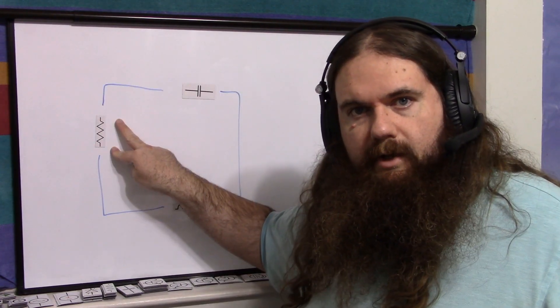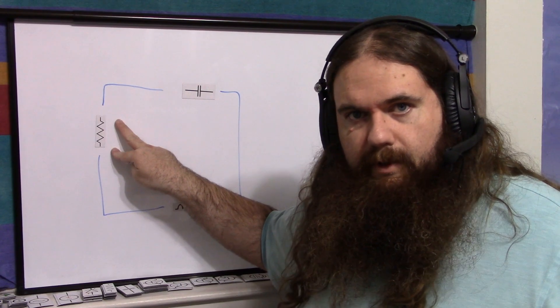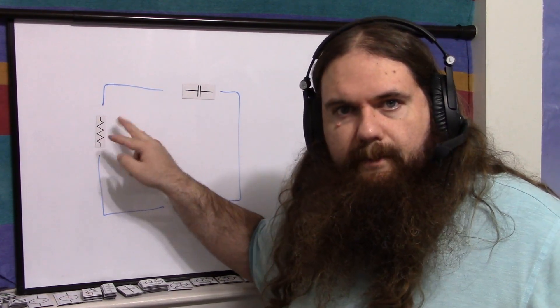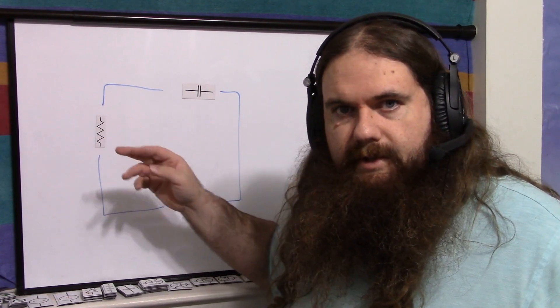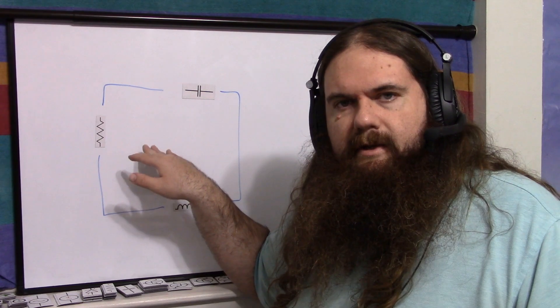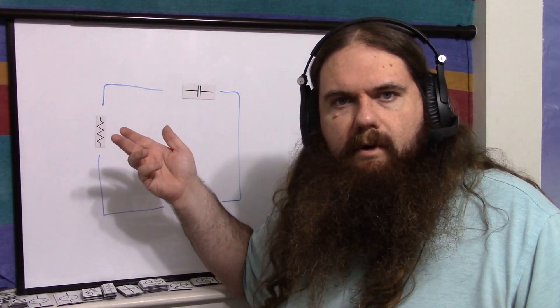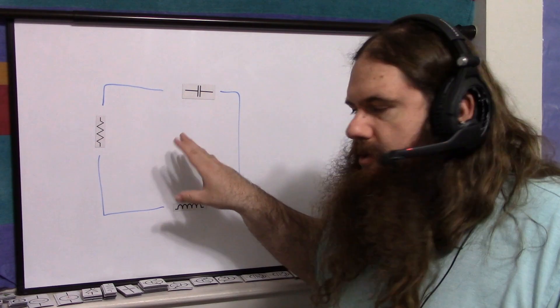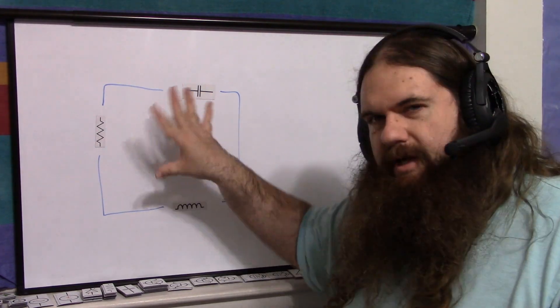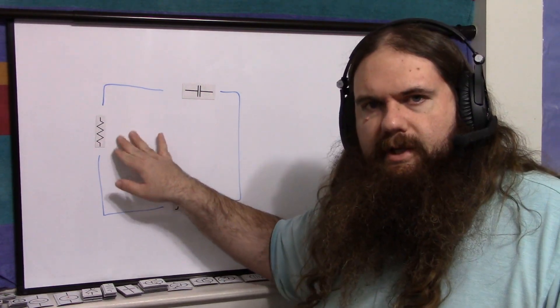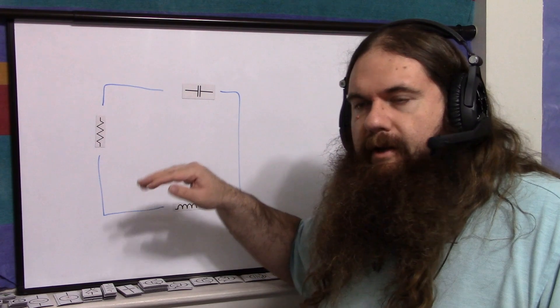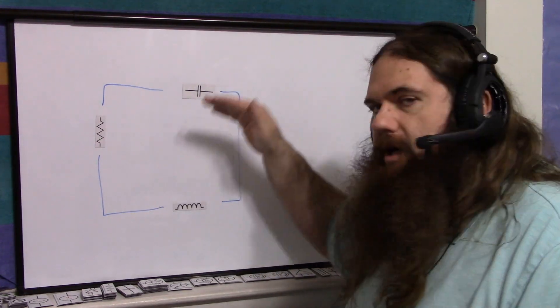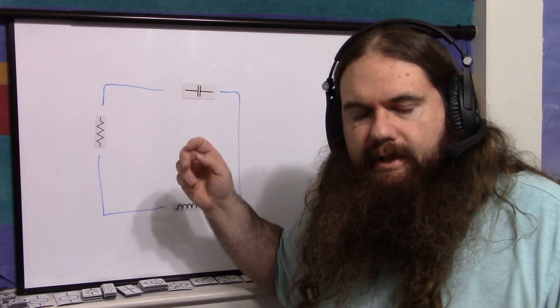Rather than having to make a square wave and filter it, it just makes a sine wave directly. Right here across the resistor is where you usually take it — this resistor could represent your load. An LC tank is a core component of a bunch of different oscillating circuits, but on its own, while it does oscillate, it eventually runs out of energy and dies.